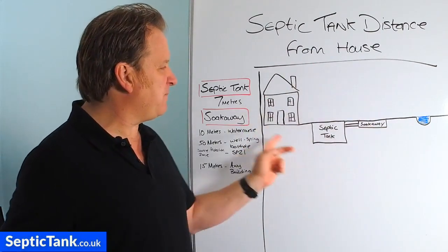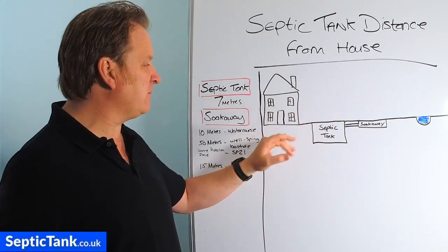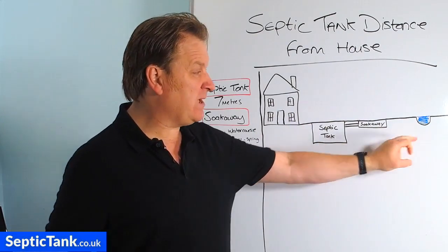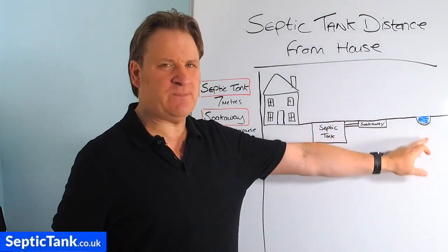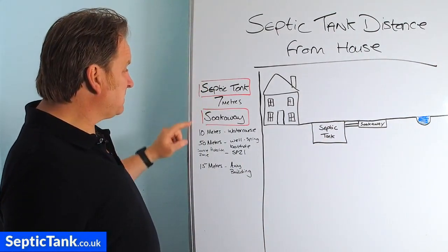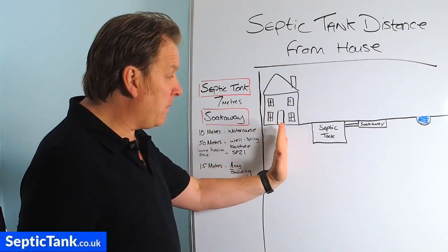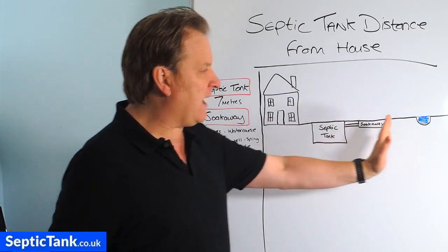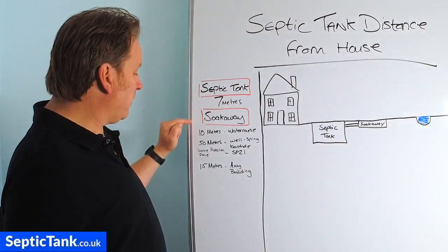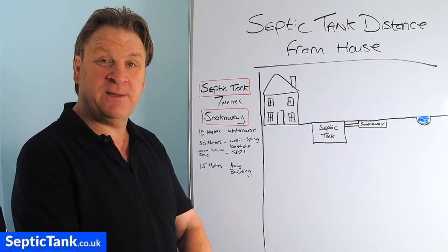So this is a diagram here that I've already drawn out. That's a house, that's a septic tank, that's a soakaway, and that's a little river, brook or stream there. On the left hand side here we've got some distances for septic tanks and soakaways away from properties and rivers, etc. Now these figures that I'm going to go through with you are from Section H of the building regs.